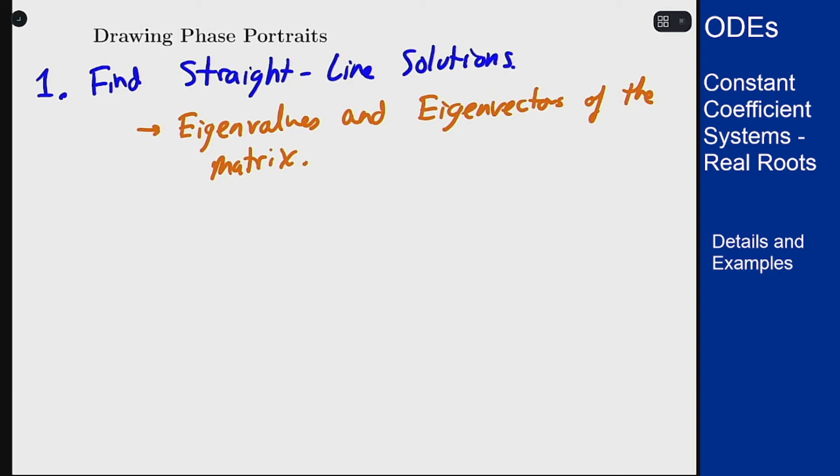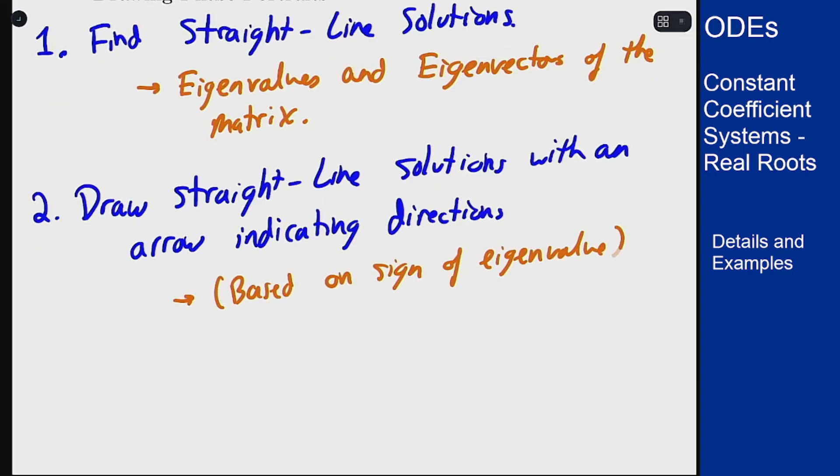Then we want to add those straight line solutions to the portrait and add an arrow indicating where the solution goes in or out of the origin. These will always be lines through the origin so we want to indicate where the solution is going in or out by putting an arrow on the line.